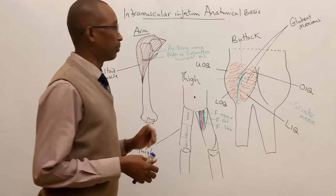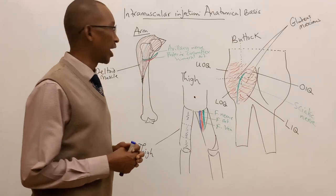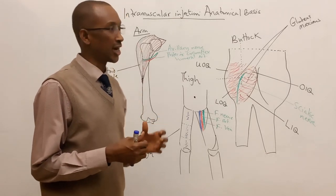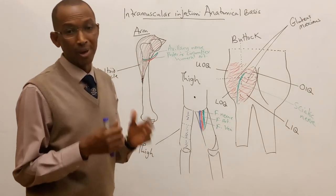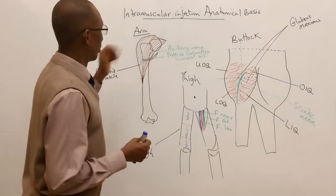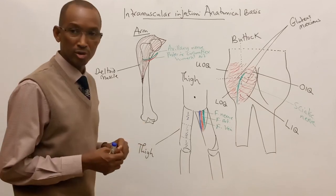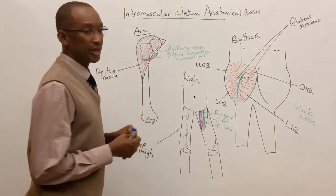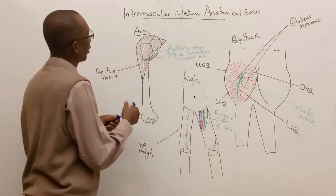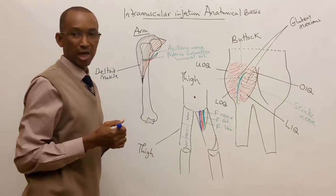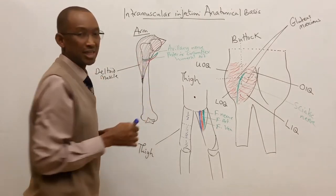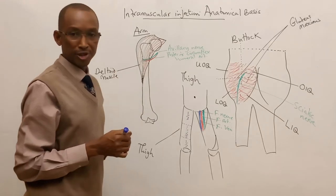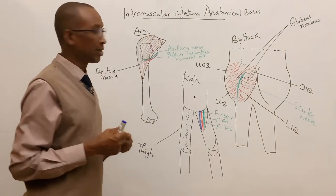The major precaution that a doctor or any other person must take is to avoid damage to the neurovascular bundles. In the arm, as discussed in a previous video on the proximal humerus, the upper one-third of the humerus contains the axillary nerve and the posterior circumflex humeral artery, which surrounds the surgical neck of the humerus.